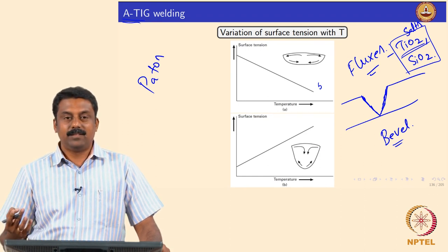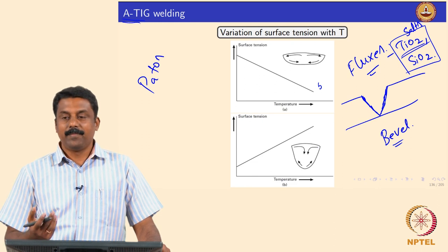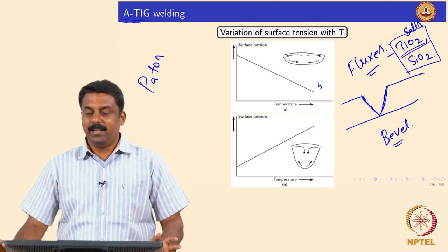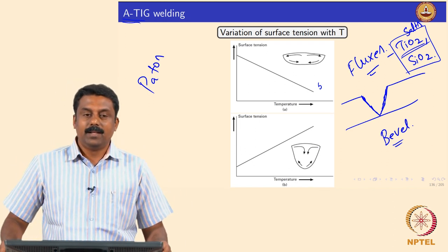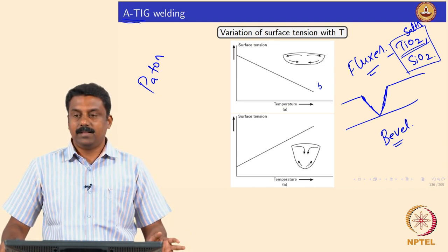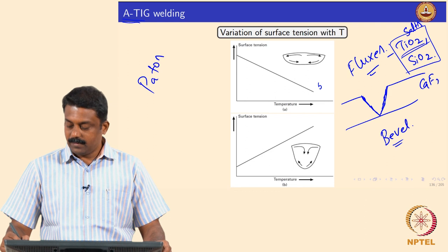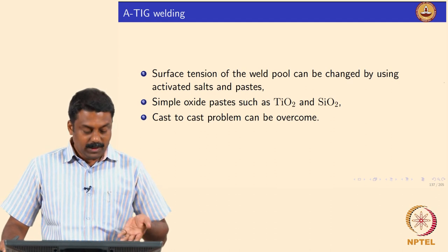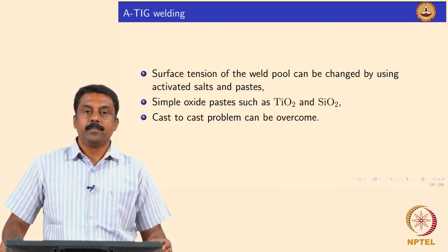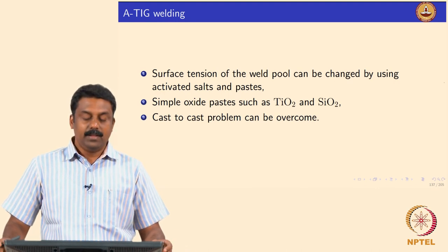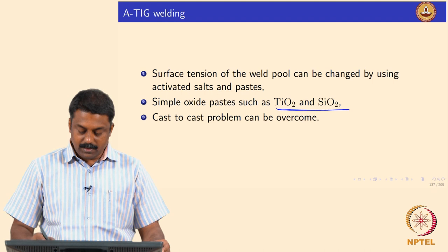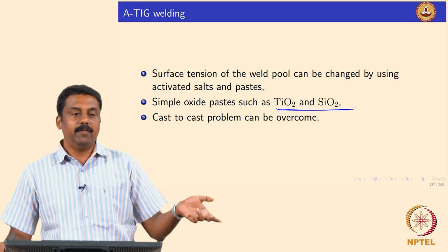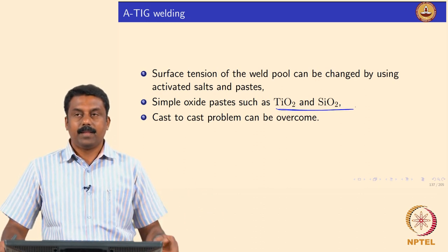The flux chemistry — each company has their own secret compositions if you buy a flux. But most of the time they generally contain oxides of titanium, titanium oxide, silicon oxide, or calcium fluoride (CaF2). These are very commonly used mold fluxes. The surface tension of the pool can be changed significantly by adding these salts and pastes — the most common pastes are made of titanium oxide and silicon oxide. By doing so, we overcome the small variation generally seen with composition, and you can have uniform, consistent weld bead geometry.